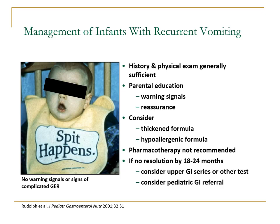For young infants with recurrent vomiting, after a good history and physical exam, educate parents regarding warning signals and reassure them if the baby is growing well, the vomit contains only milk content, is non-bilious, without blood or significant diarrhea, and development is normal. It is not recommended to give pharmacotherapy for simple reflux. If symptoms are not resolved by 18 to 24 months, consider upper GI series to rule out malrotation or refer to pediatric gastroenterology.